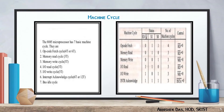Now we are going to discuss about machine cycle. There are 7 basic machine cycles: opcode fetch, which consists of 4T-state or 6T-state; memory read and memory write cycle, which consist of 3T-state; IO read cycle and IO write cycle, which also consist of 3T-state; interrupt acknowledgement cycle; and bus idle cycle.